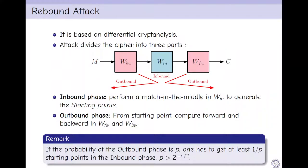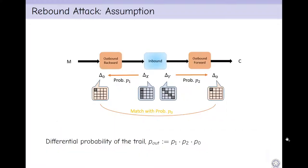Rebound attack is based on differential cryptanalysis. It divides the cipher into three parts: outbound phase 1, inbound, and outbound phase 2. In inbound phase, we perform a match-in-the-middle to generate starting points. In the outbound phase, from the starting point we compute forward and backward directions. We also remark that if the probability of the outbound phase is p, one has to get at least 1/p starting points in the inbound phase, with p greater than 2^(-n/2). The assumption here is that Δx input differential in the inbound phase propagates to Δ0 with probability p1, and output differential Δy in the inbound phase propagates to Δ0 with probability p2. The Δ0 is matched with probability p0, so therefore the differential probability of the trail becomes p1·p2·p0.